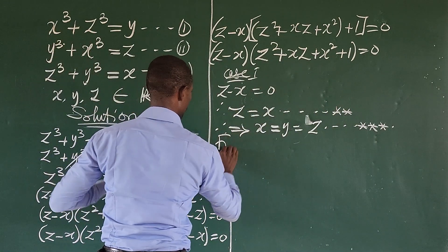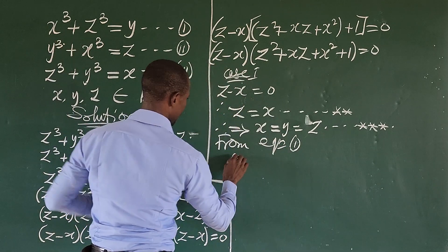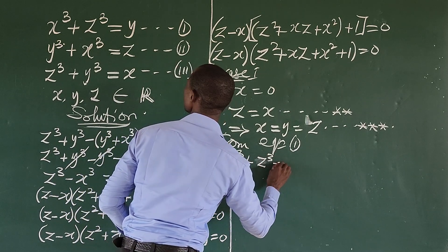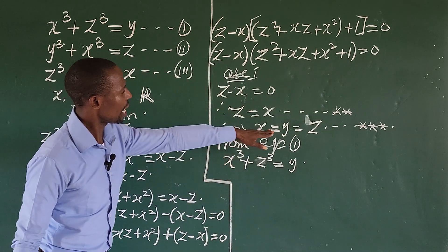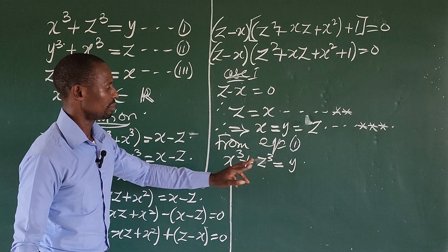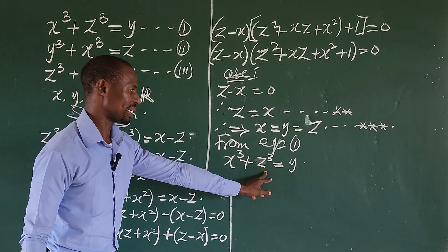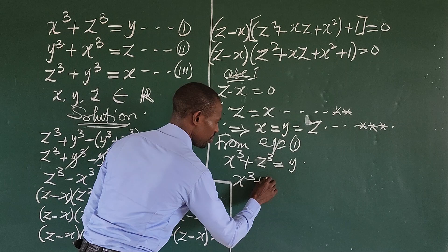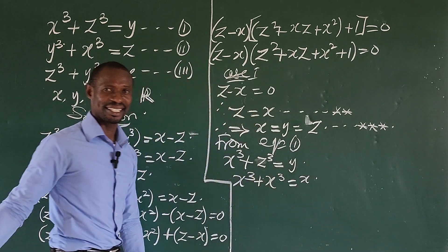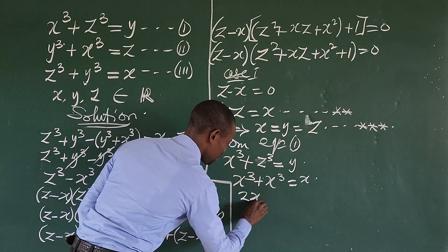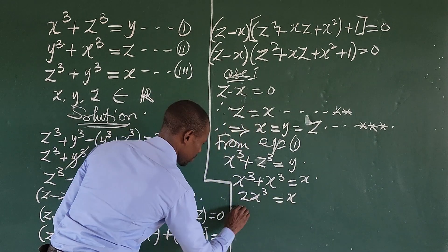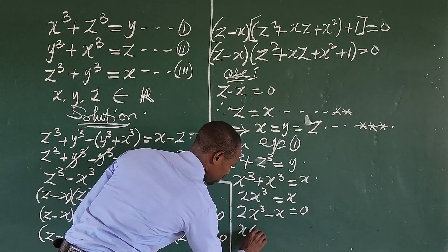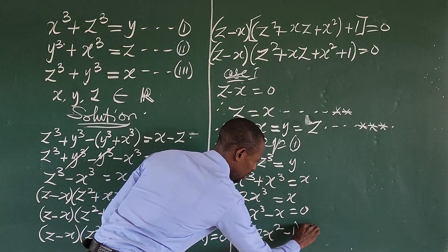Taking equation one: x³ + z³ = y. Since x = y = z, we substitute everything with x: x³ + x³ = x, giving 2x³ = x. Rearranging: 2x³ − x = 0. Factoring out x: x(2x² − 1) = 0.